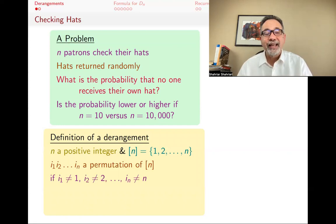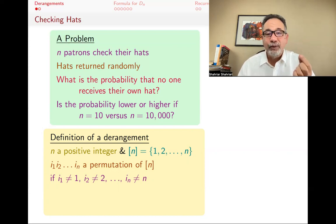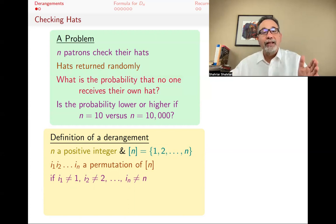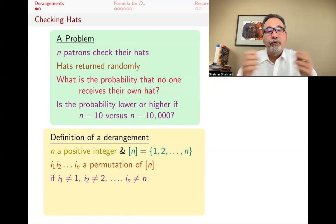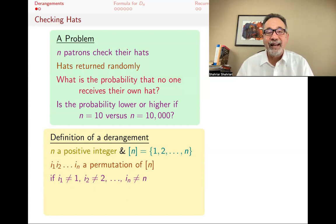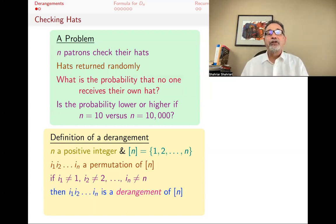We are interested in the case where in that permutation, the first element is not 1, the second one is not 2, and the Nth one is not N — so none of 1 through N are in their natural position. If you write 1, 2, 3, 4, 5 through N, that's the identity permutation where everything is right where it was supposed to be — everyone got their own hat back. We are interested in the case where no one got their own hat back. Such a permutation of 1 through N is called a derangement.